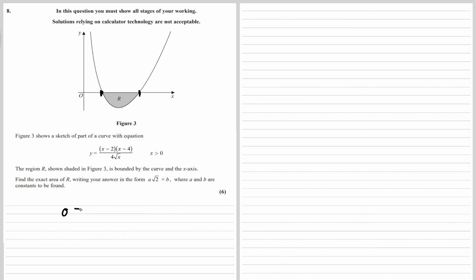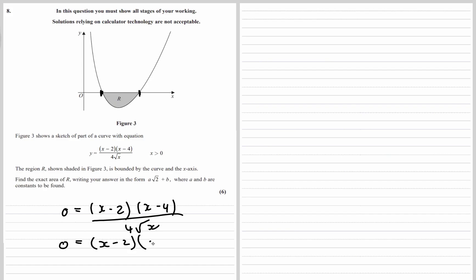So we have 0 equals x minus 2 times x minus 4 over 4 root x. Multiply both sides by 4 root x, and you're just left with x minus 2 and x minus 4. So x is 2 and x is 4, meaning our limits are going to be 2 and 4.